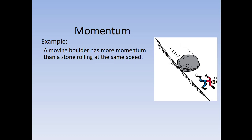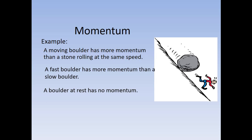For example, a moving boulder has more momentum than a rolling stone at the same speed. A big object moving at the same speed as a small object has more momentum. If you have two things that are the same size and one is moving faster, the faster object has more momentum. If something is at rest with no motion, it has no momentum.